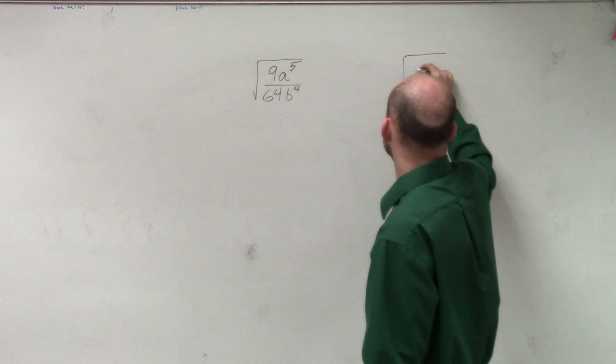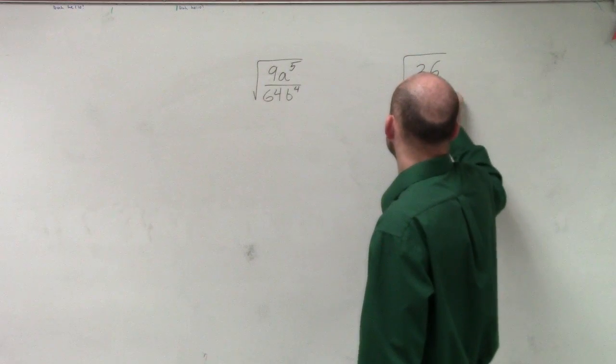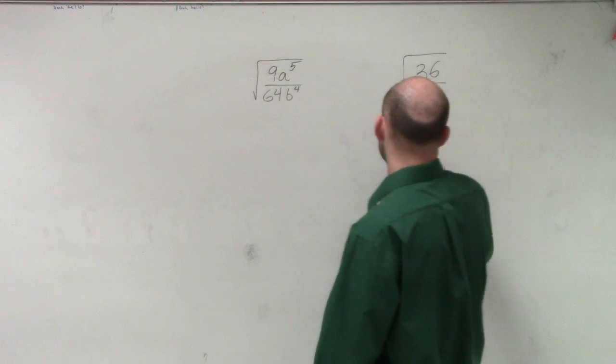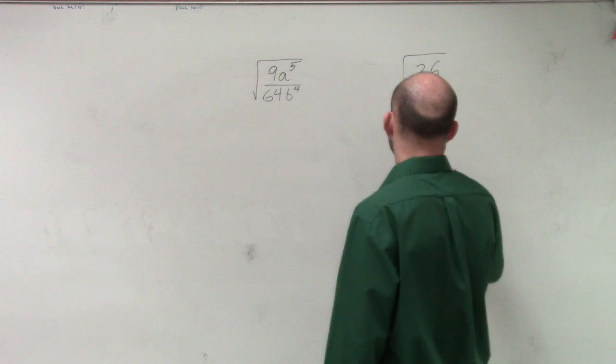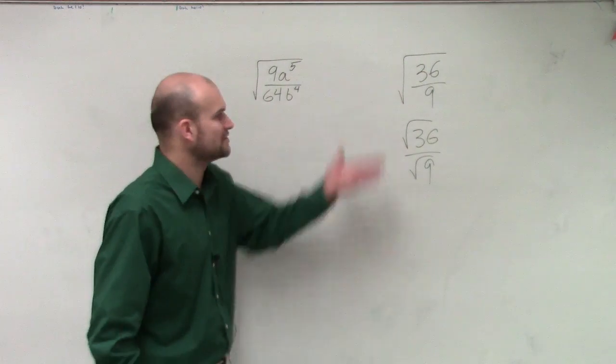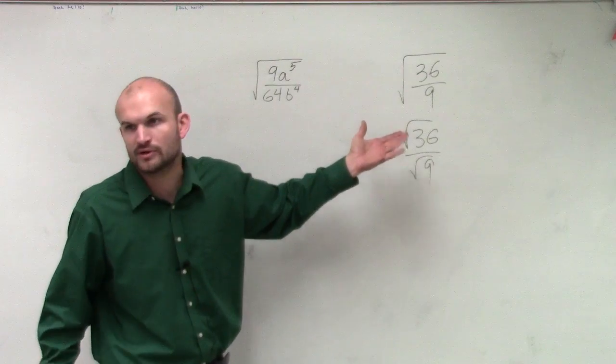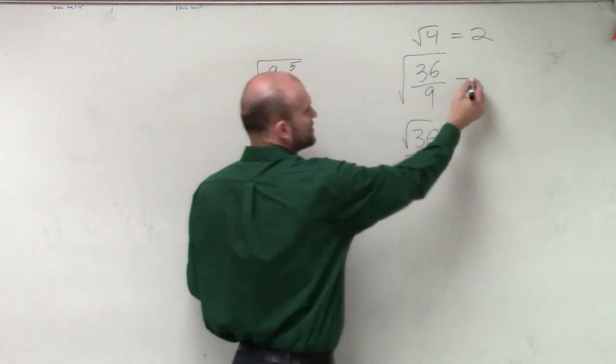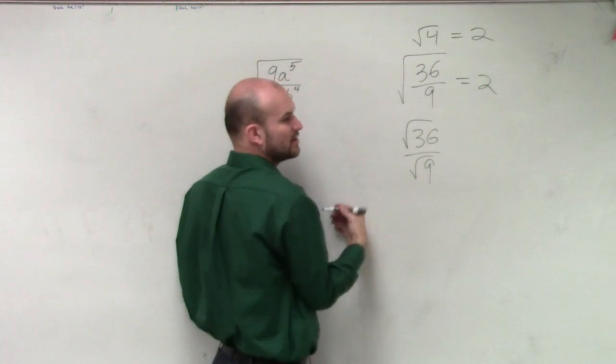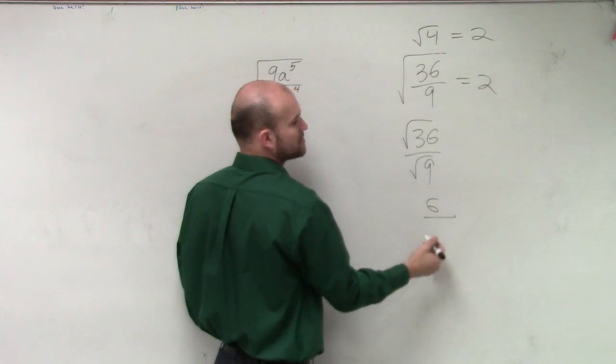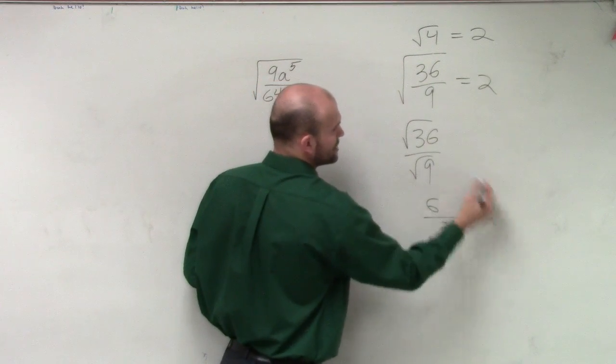What if I did the square root of 36 divided by 9? By following what we did with the product rule, that means we could do the square root of 36 over the square root of 9. What is the square root of 36 divided by 9? That's the square root of 4, which produces 2. What about the square root of 36 divided by the square root of 9? Square root of 36 is 6, divided by the square root of 9, which is 3, which equals 2.